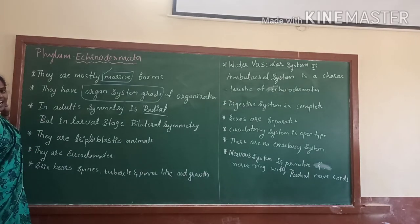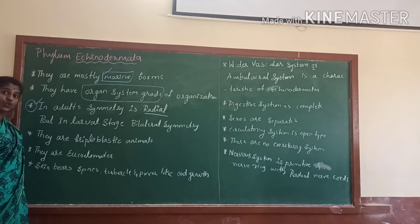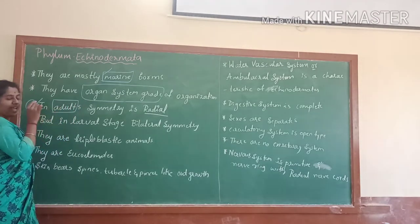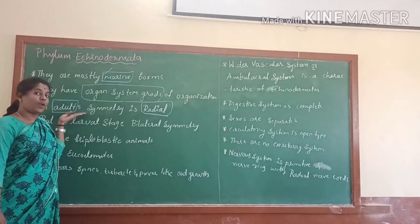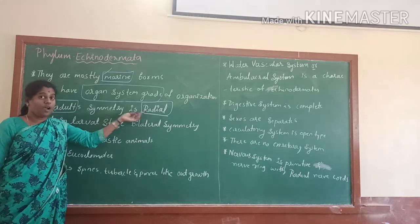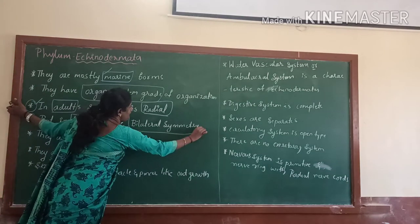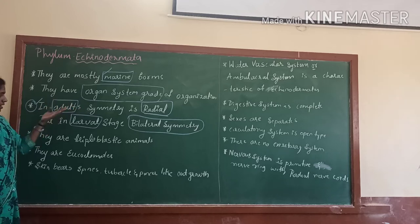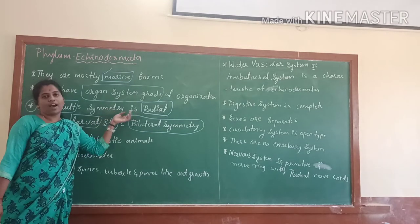In symmetry, Echinoderms have a special feature. In adults, the symmetry is radial. In the larval stage, they consist of bilateral symmetry. So, in adults they are radial symmetry, and in larvae they are bilateral symmetry.